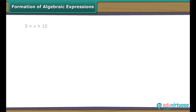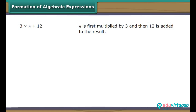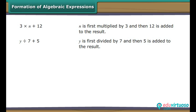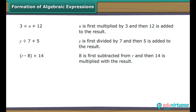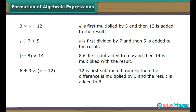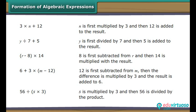Let us now look at how algebraic expressions are formed. In 3 into N plus 12, N is first multiplied by 3 and then 12 is added. In Y divided by 7 plus 5, Y is first divided by 7 and then 5 is added. In (R minus 8) into 14, 8 is first subtracted from R and then 14 is multiplied. In 56 divided by (S into 3), S is multiplied by 3 and then 56 is divided by the product.